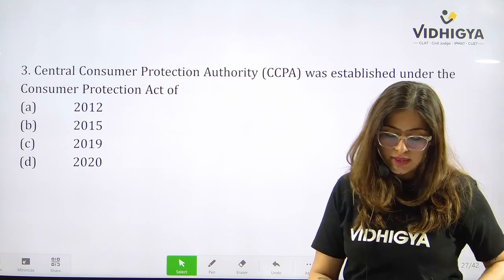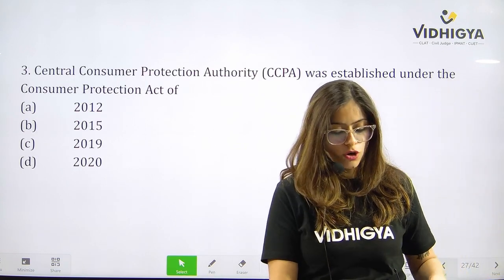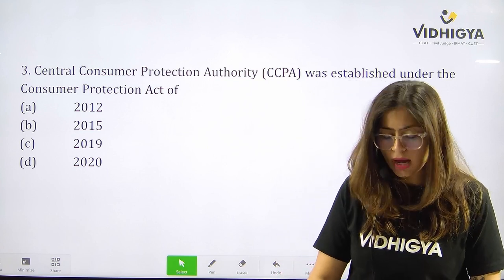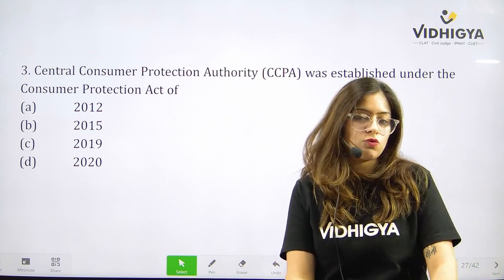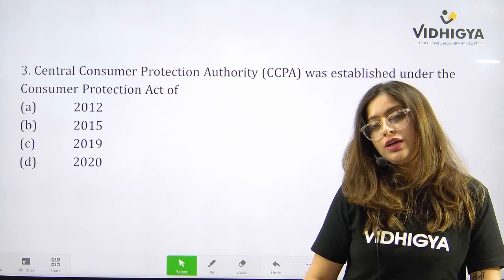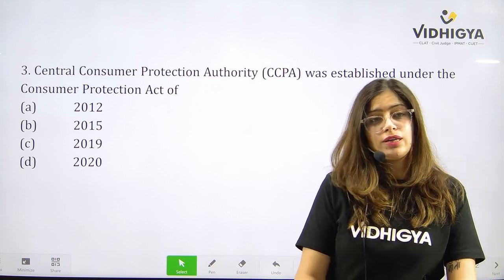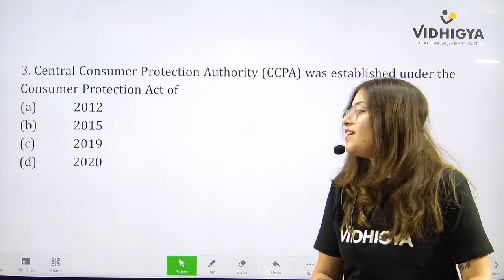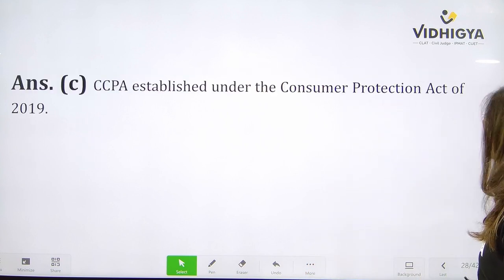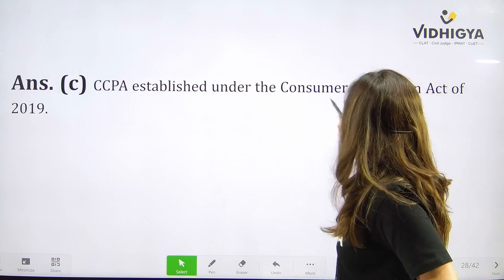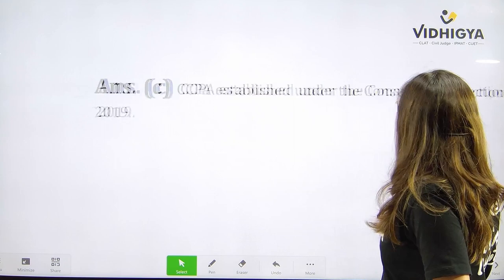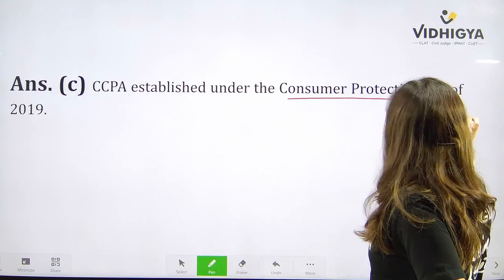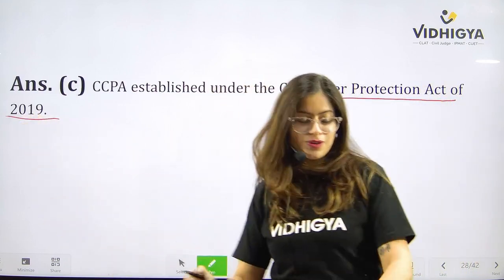Question number three: Central Consumer Protection Authority (CCPA) was established under the Consumer Protection Act of — is it A. 2012, B. 2015, C. 2019, or D. 2020? The correct answer is C — the Consumer Protection Act of 2019.